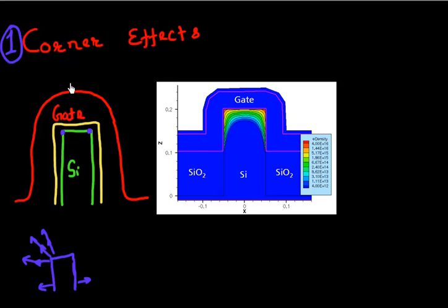So when you apply a gate voltage, you get a much higher electric field in this region as compared to what you get on your side walls. This is illustrated in this figure. This is plotting the electron density at voltage slightly over my threshold voltage.